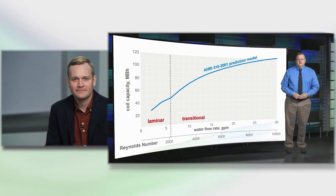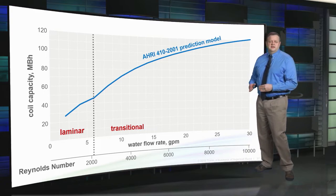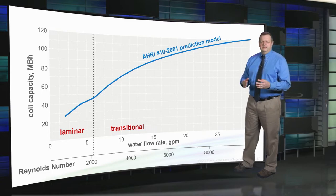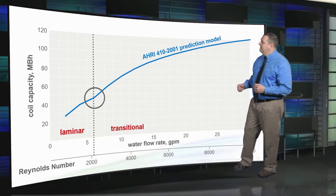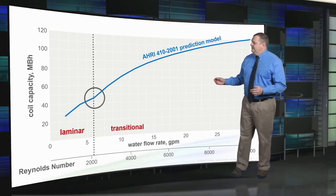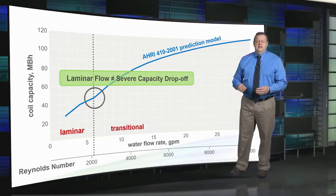Back in 2015, Trane produced an ENL on coil selection and optimization, interviewing a 20-year veteran of the AHRI 410 Engineering Committee to address this concern. He showed how the AHRI prediction methodology was refined in 2001, allowing coils to be accurately rated well into the laminar flow region without fear of large discrepancies between predicted and actual performance. A chart plotting coil capacity versus water flow rate and Reynolds number shows only a slight dip in capacity in the laminar region — nothing drastic. In summary, laminar flow does not cause a severe drop-off in capacity.